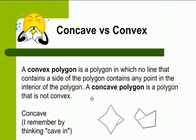Now, polygons can be concave or convex. So a convex polygon is a polygon in which no line that contains the side of the polygon contains any point in the interior of the polygon. And then a concave polygon is a polygon that is not convex, which is not a very good definition.